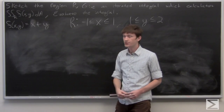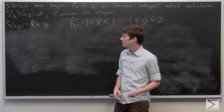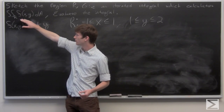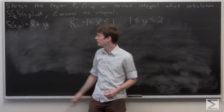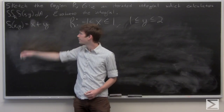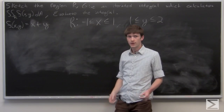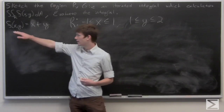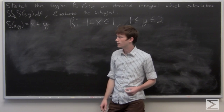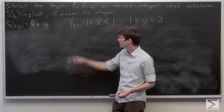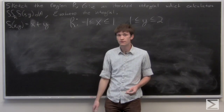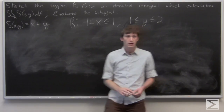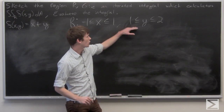In this problem, we're asked to sketch the region R and give an iterated integral that evaluates the double integral of our function f of x, y over the region R. And then we're asked to evaluate that iterated integral. We're given that f of x, y is the function x plus y, and our region R is determined by x being between negative 1 and 1, and y ranging from 1 to 2.